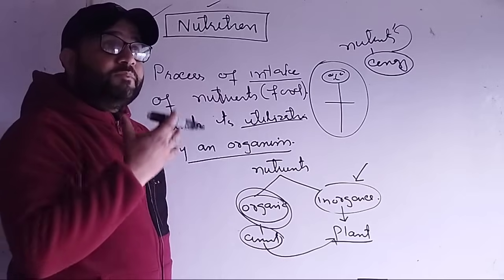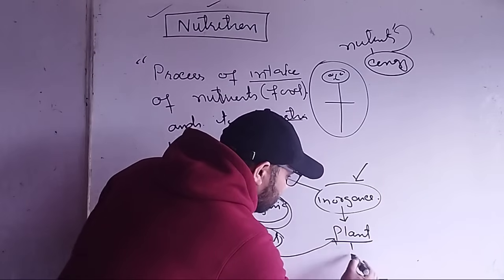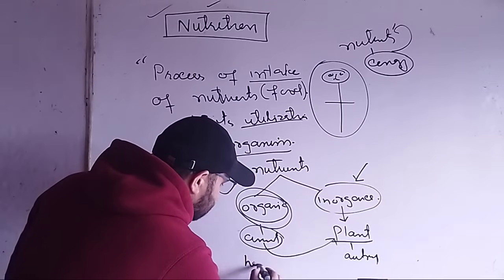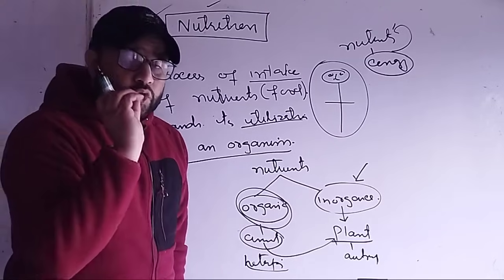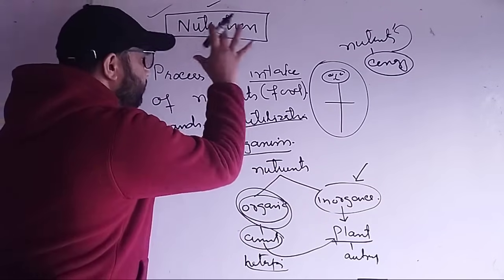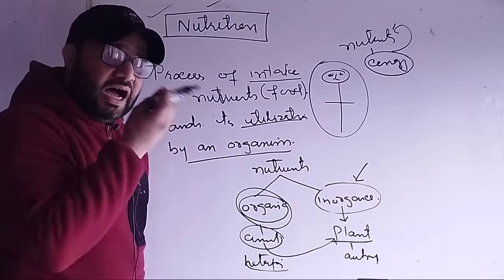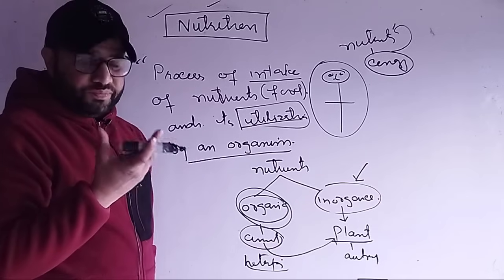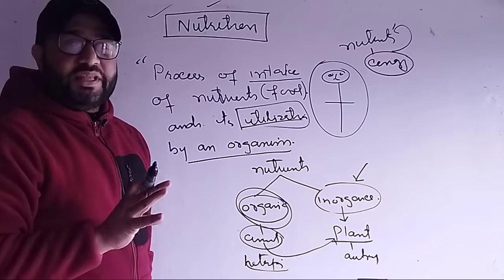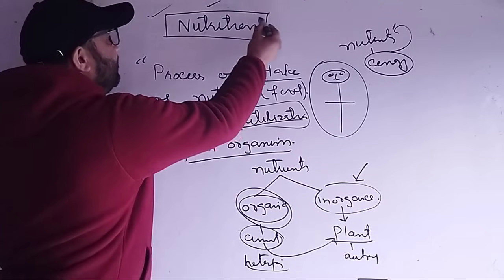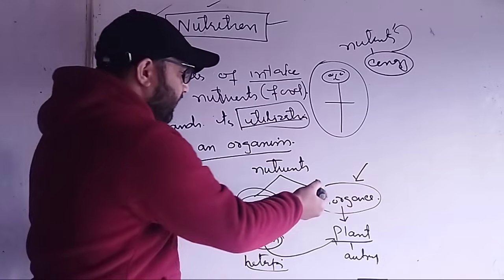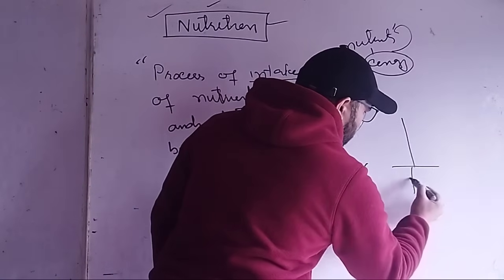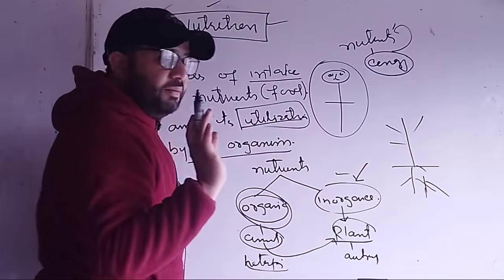For example, plants prepare their own food with the help of a process called photosynthesis. But animals are dependent on plants. So animals' nutrition is different from plants'. Plants khud apna food prepare karte hain — that is why they are called autotrophs. Since we have a different mode of nutrition, we are called heterotrophs.